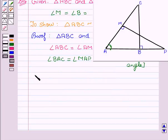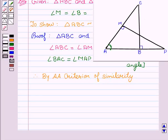we can say that by AA criteria of similarity, we have triangle ABC similar to triangle AMP. Hence proved.